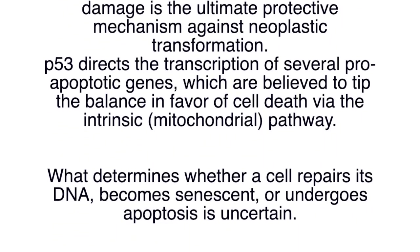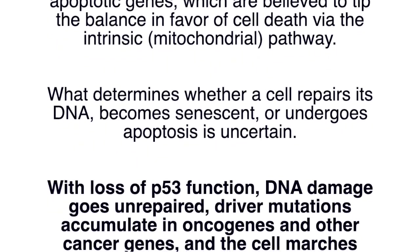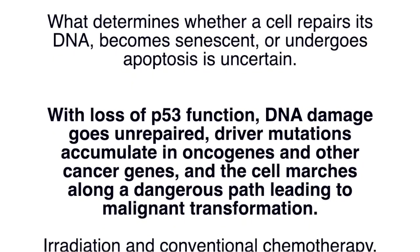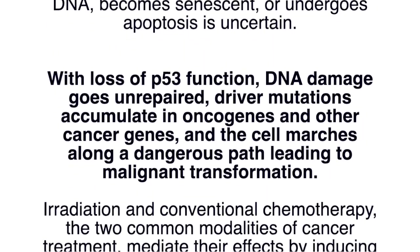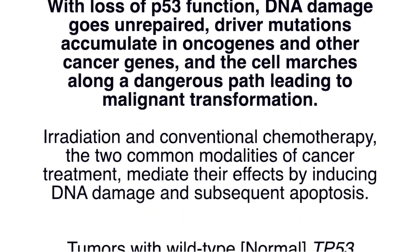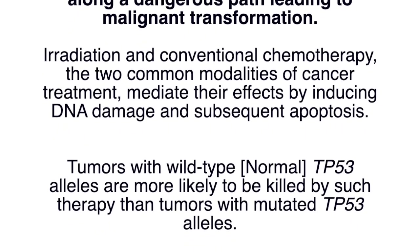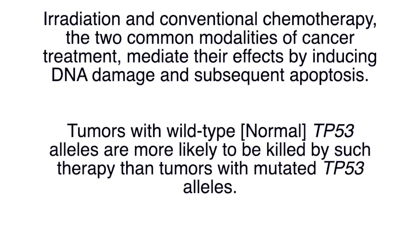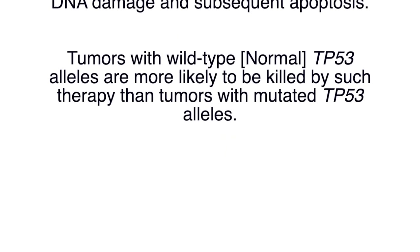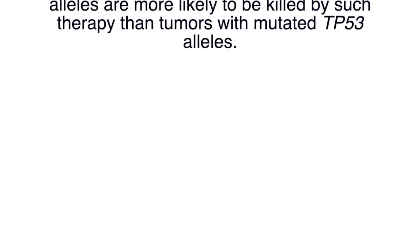What determines whether a cell repairs its DNA, becomes senescent, or undergoes apoptosis is uncertain. With loss of P53 function, DNA damage goes unrepaired, driver mutations accumulate in oncogenes and other cancer genes, and the cell marches along a dangerous path leading to malignant transformation. Irradiation and conventional chemotherapy — the two common modalities of cancer treatment — mediate their effects by inducing DNA damage and subsequent apoptosis. Tumours with wild-type (normal) TP53 alleles are more likely to be killed by such therapy than tumours with mutated TP53 alleles.